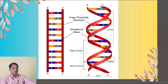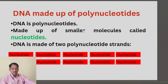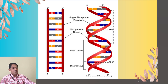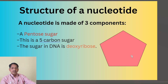Adenine will always pair with thymine, and G will always pair with C. After getting the knowledge of these three components, we note that DNA is made up of polynucleotides. Each nucleotide has three components: one is the phosphate group, second is sugar, and third is nitrogenous bases. As you can see here, these are the two strands of the DNA made up of nucleotides, and many nucleotides come together to make a DNA.